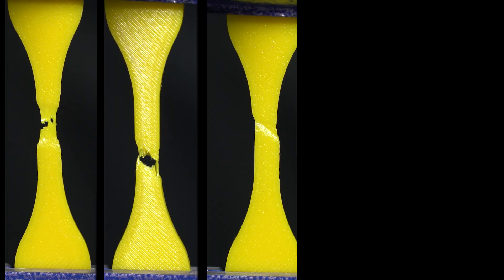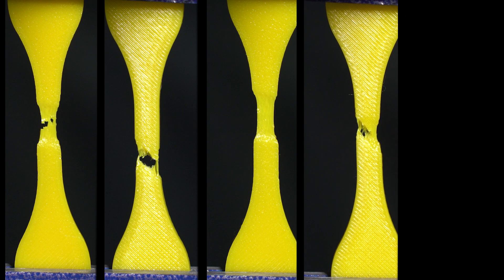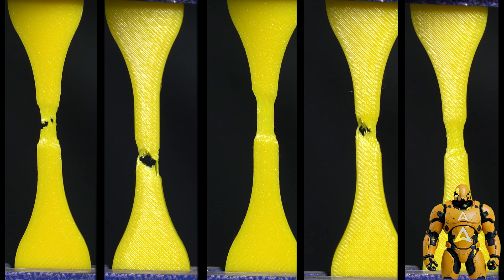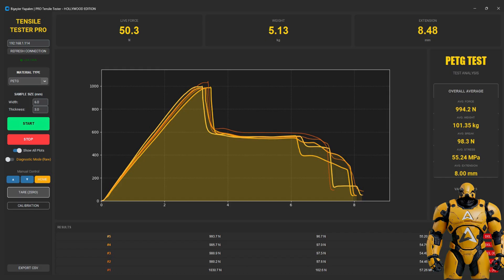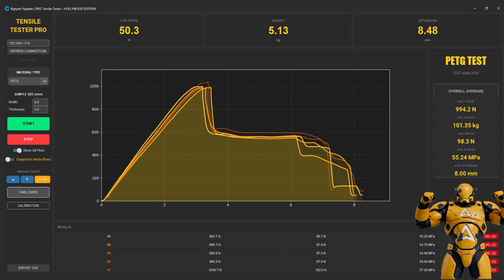Next is yellow PETG. It really fights the pull. PETG reaches a peak stress of about 55 megapascals, a sustained force of 503 newtons, and a huge elongation of around 8 millimeters.